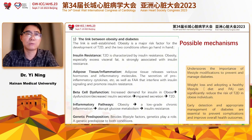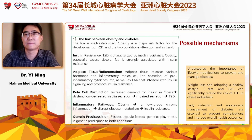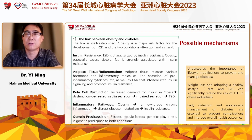Type 2 diabetes is characterized by insulin resistance. Obesity, which generally involves excess visceral fat, is strongly associated with insulin resistance through multiple pathways, like increased pro-inflammatory factors. Adipose tissue and inflammation in obesity also increase the risk of diabetes. Obese individuals are in a chronic state of low-grade inflammation. The adipose tissue secretes multiple adipokines, further increasing the potential risk of diabetes.